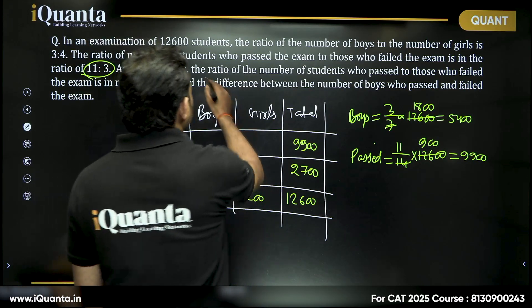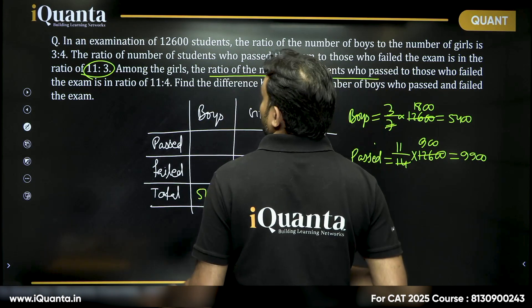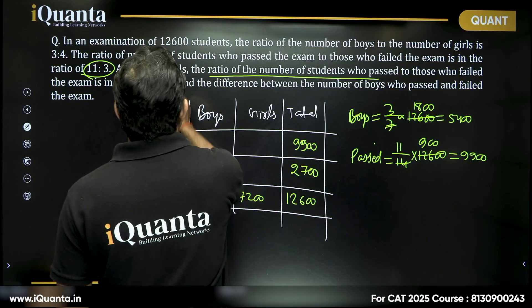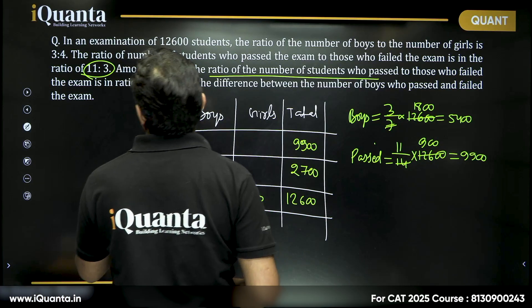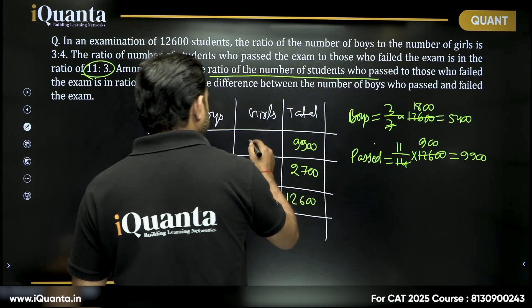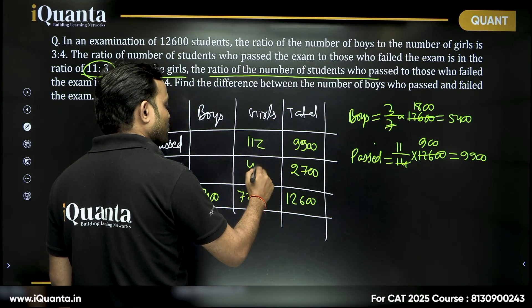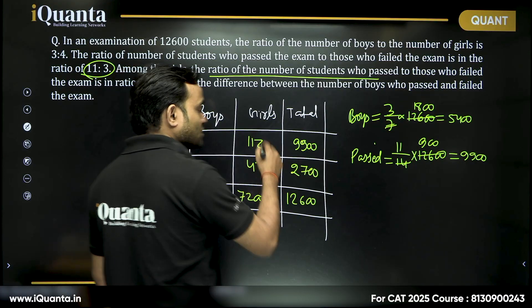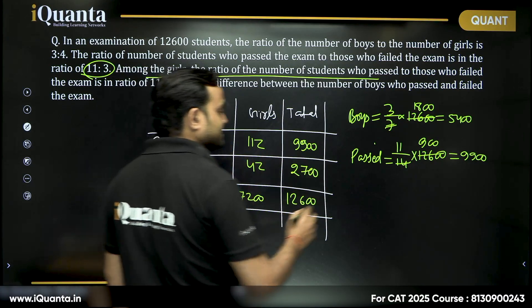Then the ratio of the number of students is already given and among the girls who passed and who failed are in the ratio 11 is to 4. So what we can say if this is 11z, this is 4z. So total 15z, how many girls passed?